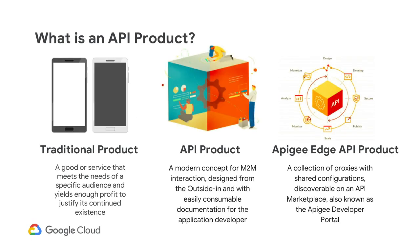The API product is a modern concept for machine-to-machine interaction. As a product, it has similar components to that of a traditional retail product. If you build upon the concept of the API product, focusing on the consumer, then you might end up with a Google Apigee Edge API product. In the next few slides, we will deconstruct the API product to help you understand the approach to design, build, and deploy on the Google Apigee platform.